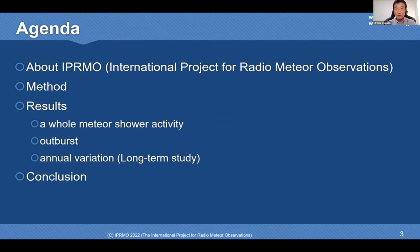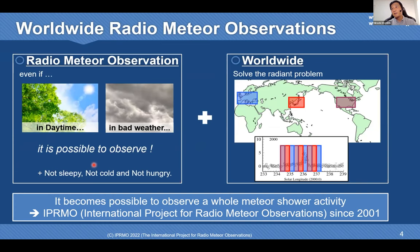The agenda is as follows. I would like to start by talking about IPRMO. As you know, radio meteor observation is possible even in daytime and bad weather — and you won't be sleepy, cold, or hungry. Besides, a worldwide network solves the radiant problem because it is possible to integrate data at each region.